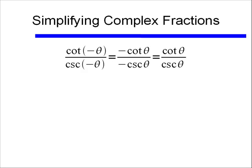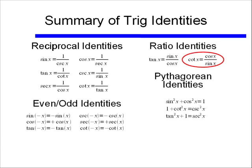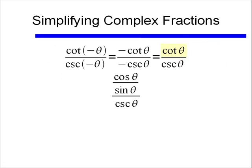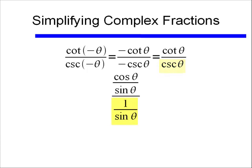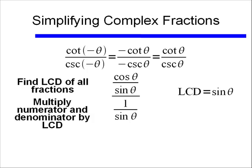Now I need to look at my ratio identities. The cotangent of an angle is equal to cosine of the angle divided by sine of the angle. So I'll rewrite cotangent of theta as cosine theta divided by sine theta. Now for the cosecant — using my reciprocal identity, the cosecant of an angle is 1 over the sine of that angle. So I'll rewrite cosecant of theta as 1 over sine theta. Now to get rid of this complex fraction — a fraction within a fraction — I'll find my LCD, which is sine of theta, and multiply my numerator and denominator by that LCD.